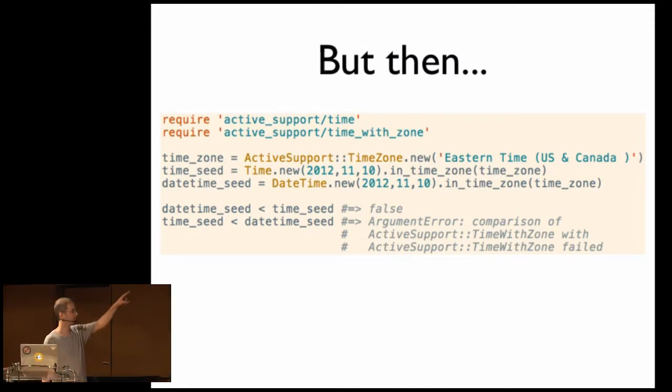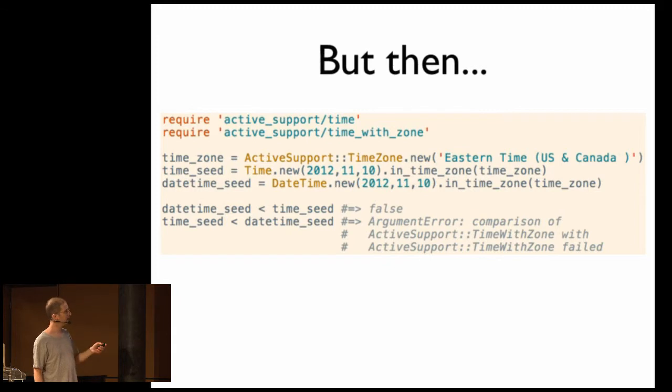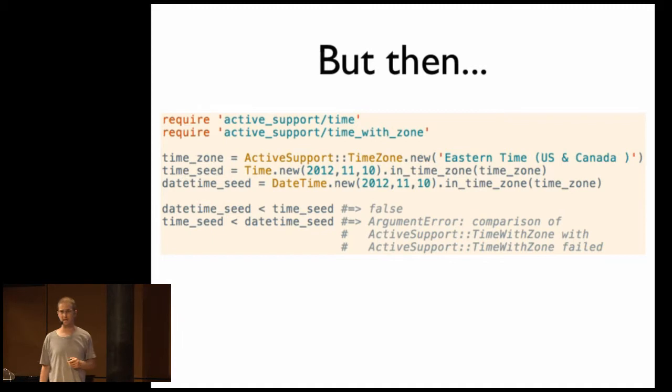But this is how I was able to reduce our failing test case and demonstrate the problem. After loading up active support time and time with zone and getting a time zone, I created an active support time with zone object first by calling in time zone on a time object and then by calling time in time zone with a date time object. And it turns out if we take the one that's initialized from date time and compare it to time, we get false. Good. That's exactly how this is supposed to behave. But if we flip it and we do time less than date time, that's when we get our exception. Now, here's the thing. This works in MRI, but not in JRuby. Why?